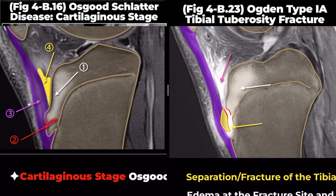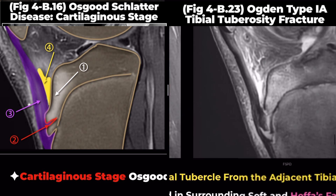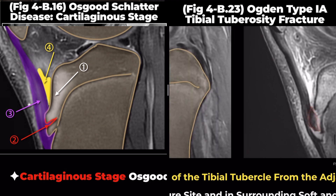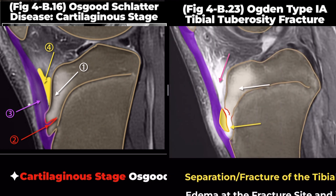However, there are also characteristic findings specific to each condition. In the case of tibial tubercle fracture, a fracture line is present through the tubercle ossification center between the proximal tibia and tuberosity. In Osgood-Schlatter disease, transverse clefts are observed in the secondary ossification center of the tuberosity.